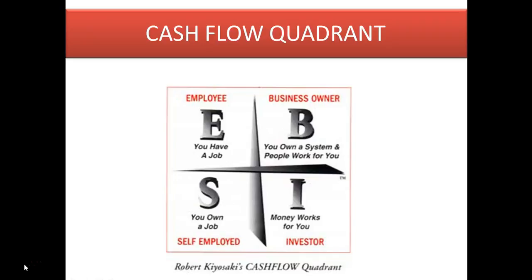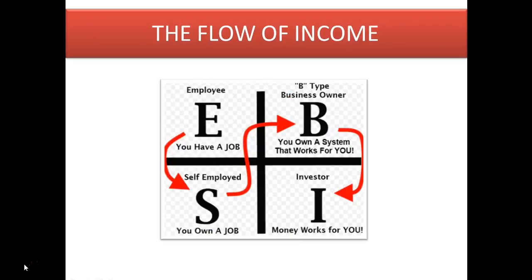This is Robert Kiyosaki's Cashflow Quadrant and that's the basis for what we're talking about. This is a practical program built around this model. The flow of income — usually the lowest is the employee where you have a job, then to the self-employed. What we're going to look at today is a bit more intense and I'll say upfront, it's going to be more challenging. But if you want something different, you have to do something different.